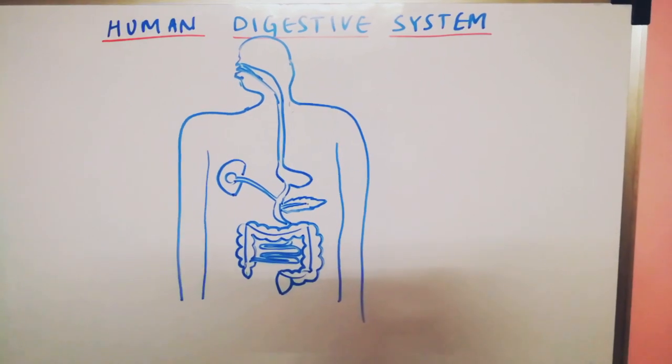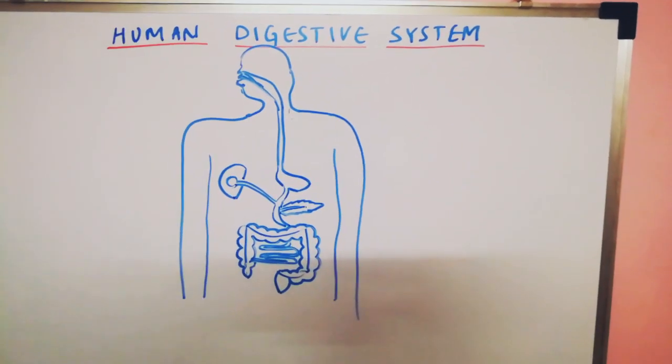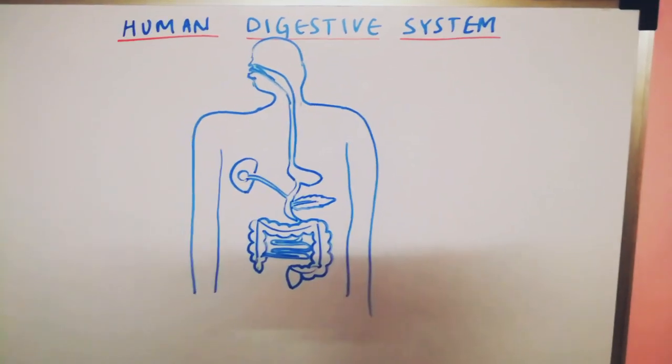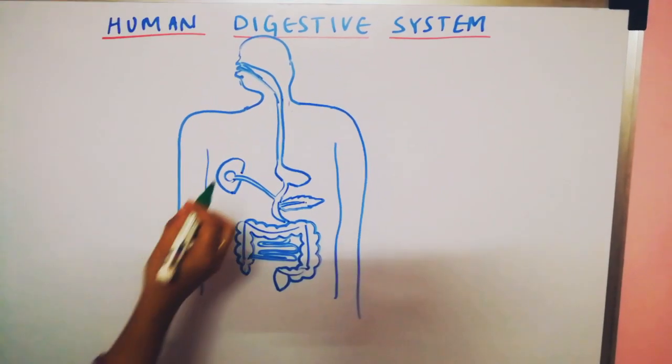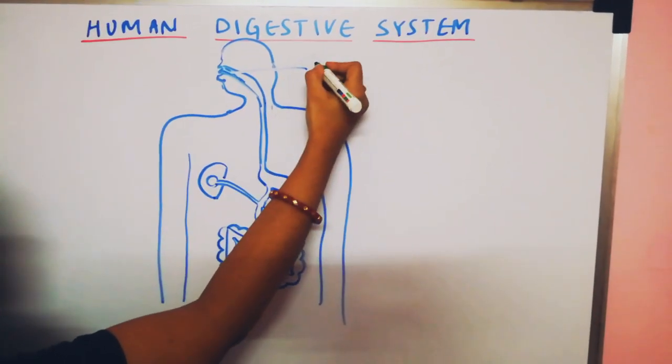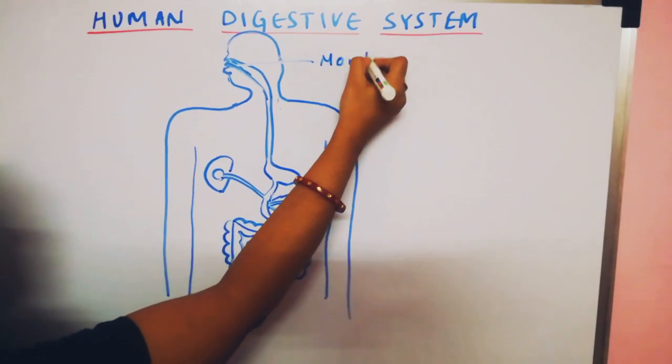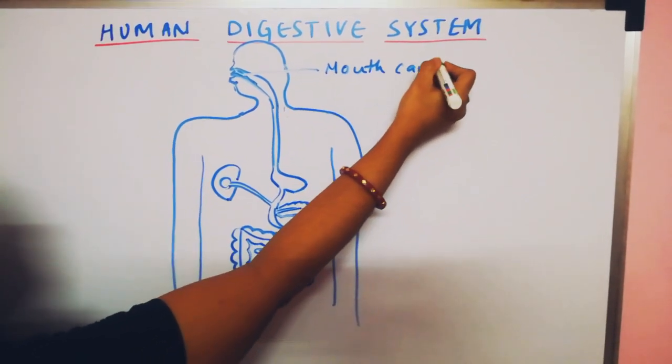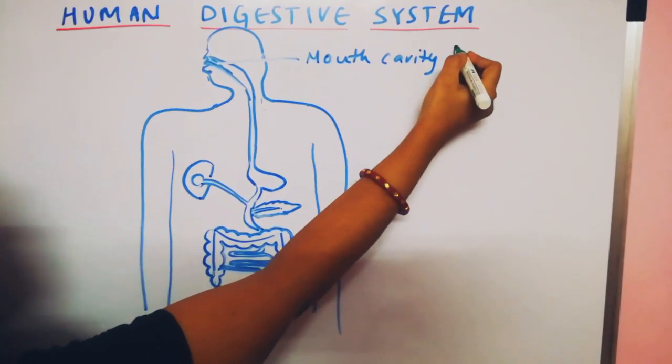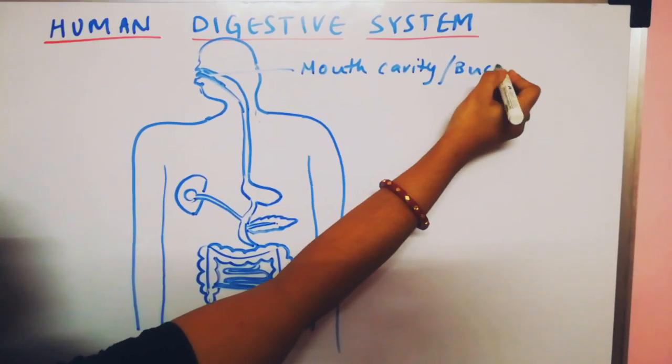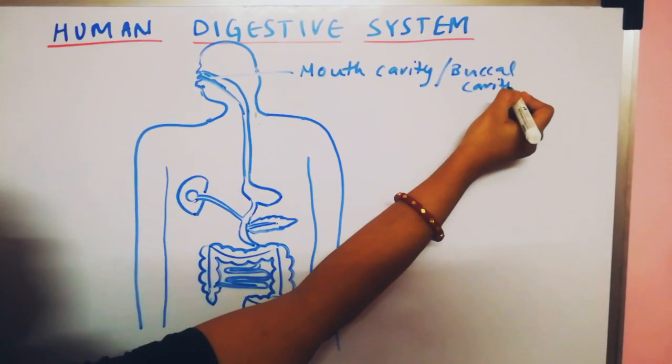Now the main thing is labeling. You need to label the diagram. So the first thing what you will label it as, that is mouth cavity. Mouth cavity is also called as buccal cavity.